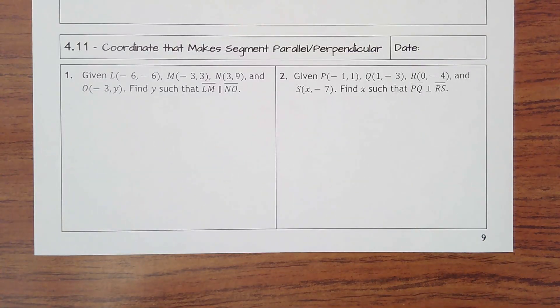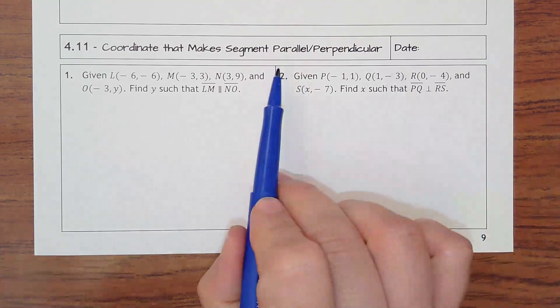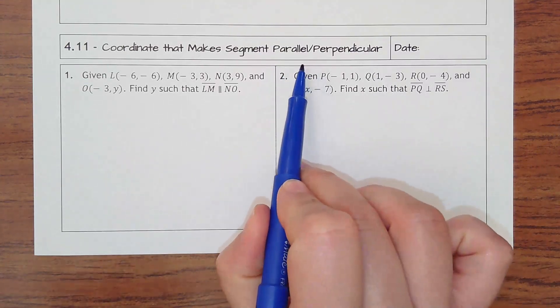Lesson 4.11 is finding a coordinate that makes a segment parallel or perpendicular. So remember, make sure you're reading if it says, do they want parallel lines or perpendicular?